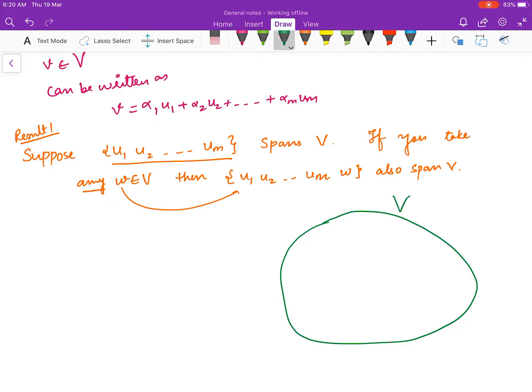You have a space V, inside that you have a set {u1, u2, ..., um}, and somewhere is an element w here. Now your set is already strong - already strong in the sense that this set has the capacity to spread and make whole of V.